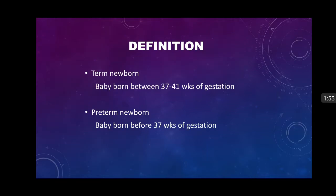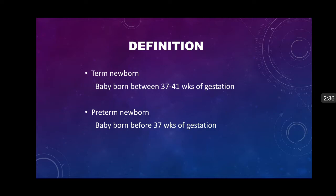As you all know the definitions: the term newborn is a baby born between 37 to 41 weeks of gestation. Whenever we discuss gestation, we always speak in weeks. When we say 37 weeks, it means at least 36 weeks and 7 days completed. 36 weeks and 6 days is still considered 36 weeks. 37 to 41 weeks and 6 days is considered term, and post-term is after 42 complete weeks.